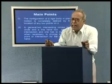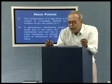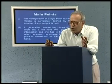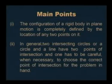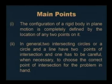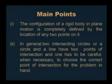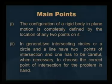The second point is, as we will see when we solve the examples, that very often we will need to draw two circles which are intersecting, or a line and a circle which are intersecting. We know that such intersection points can be two — two intersecting circles in general intersect at two points, and a line and a circle also intersect generally at two points. However, sometimes it may be necessary to choose the correct point of intersection for the problem in hand.